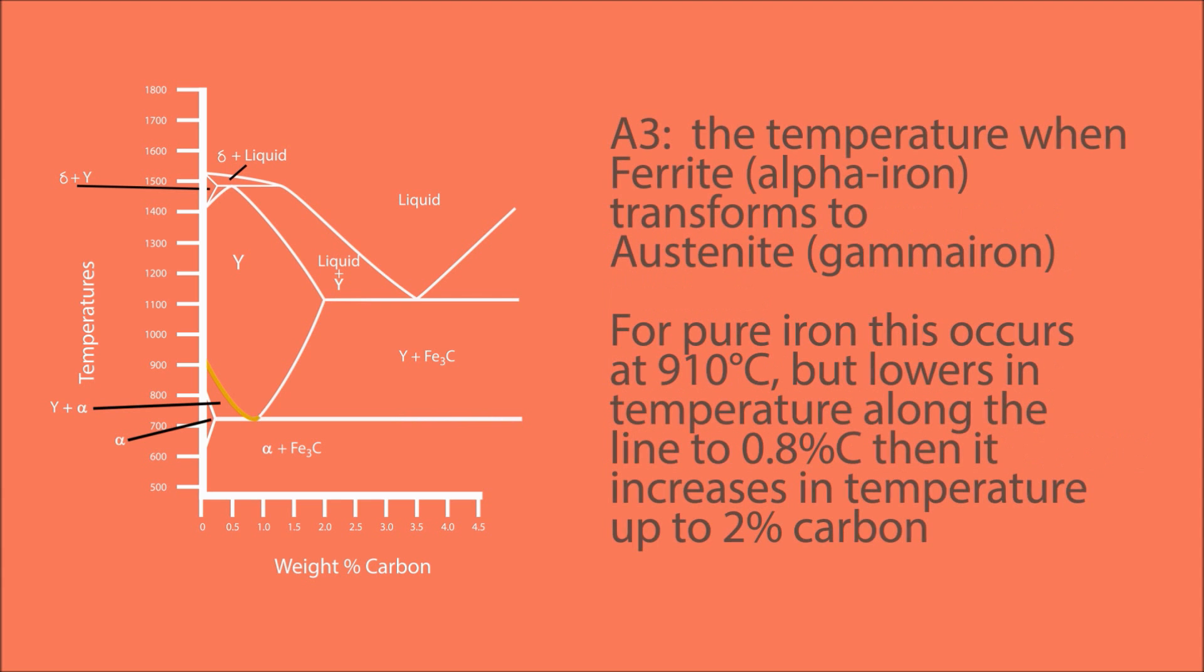A3: The temperature when ferrite (alpha iron) transforms to austenite (gamma iron). For pure iron this occurs at 910 degrees Celsius, but lowers in temperature along the line to 0.8% carbon. Then it increases in temperature up to 2% carbon.